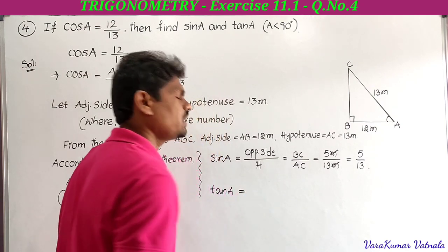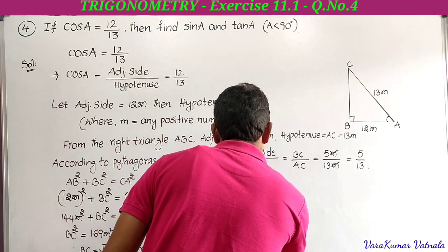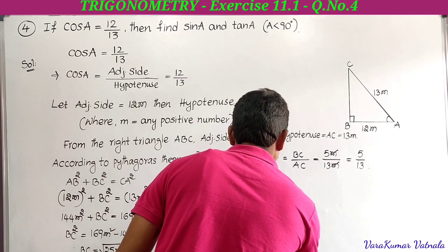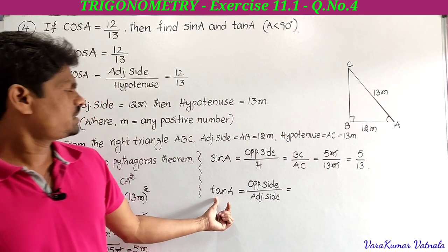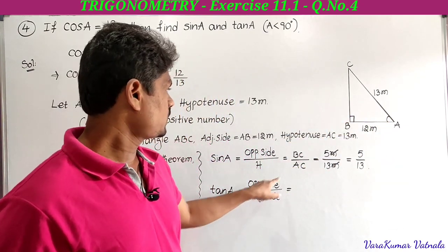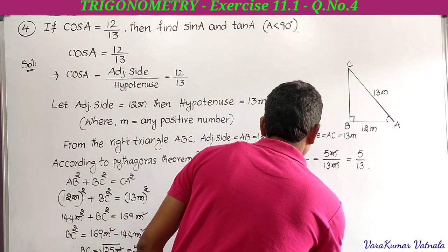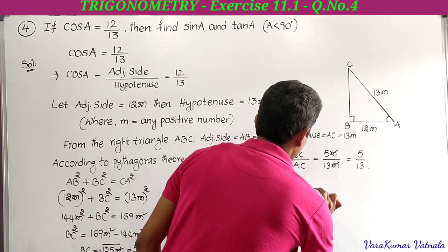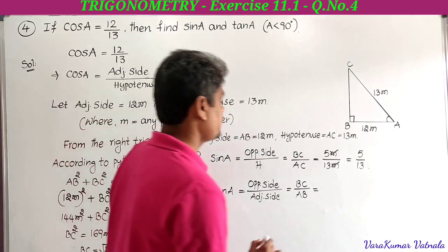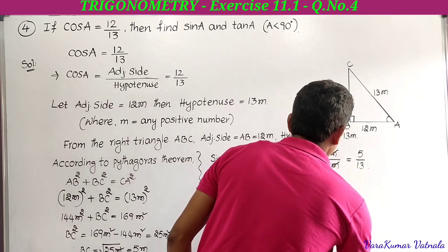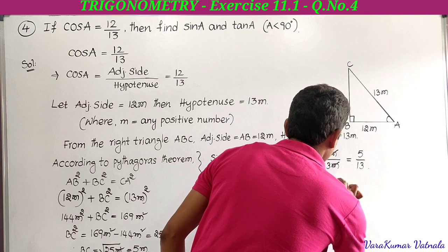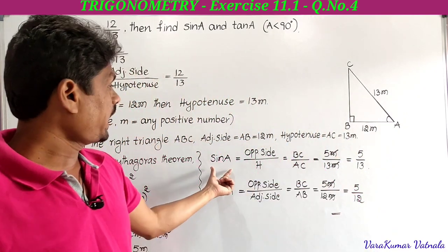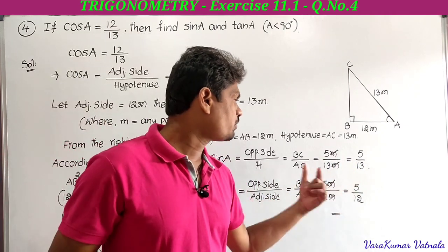Tan A equals opposite side by adjacent side. Opposite side to angle A is BC, adjacent side is AB. So tan A equals BC by AB, which is 5m divided by 12m. M gets cancelled, giving tan A equals 5 by 12. So sin A equals 5 by 13 and tan A equals 5 by 12.